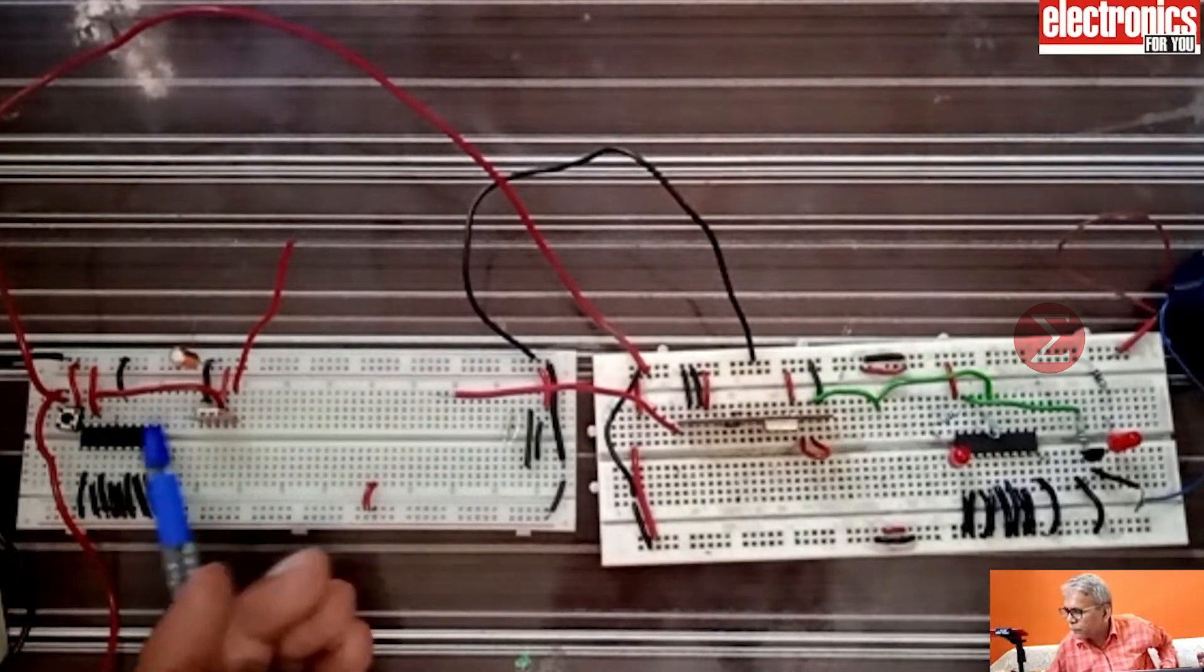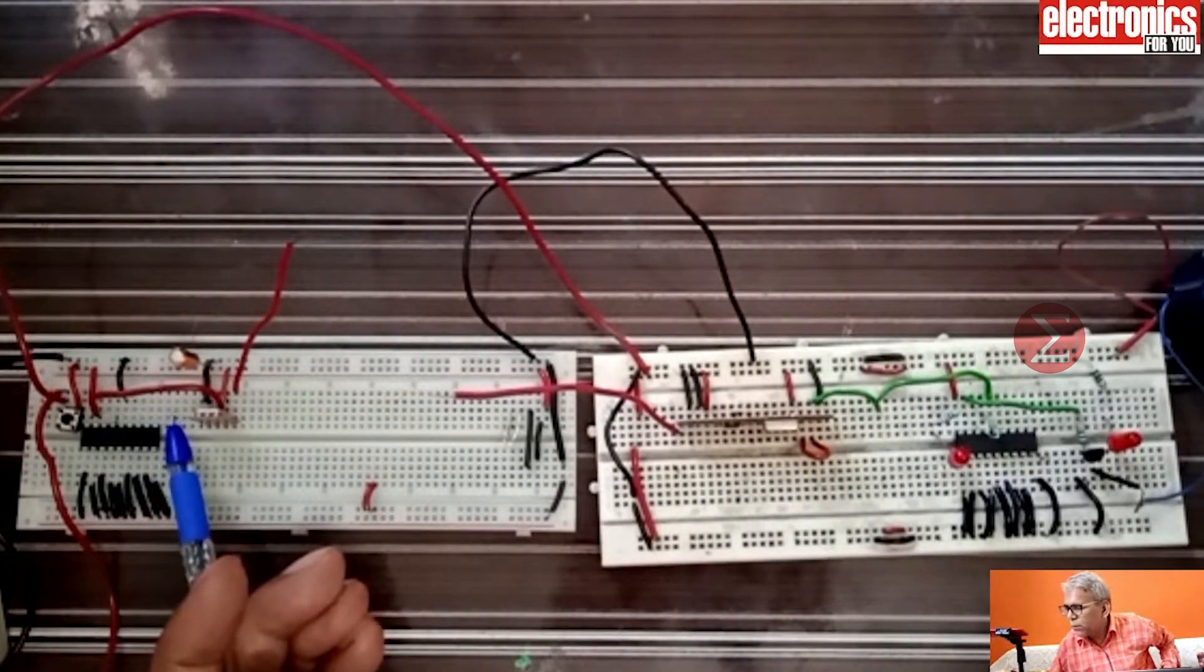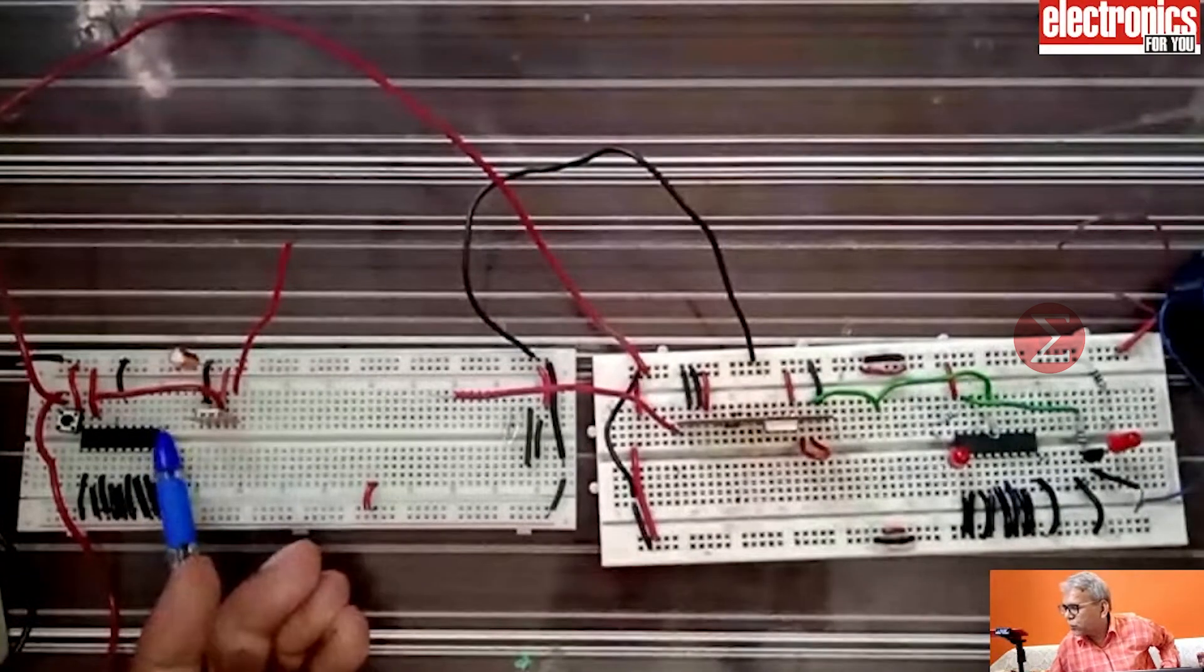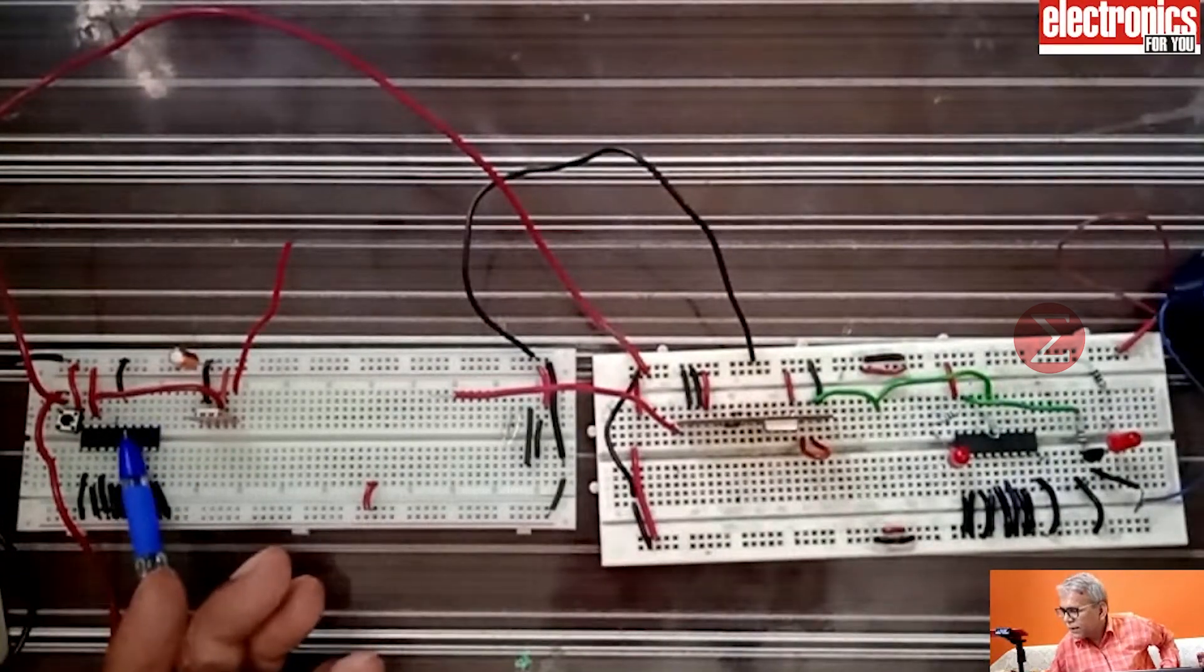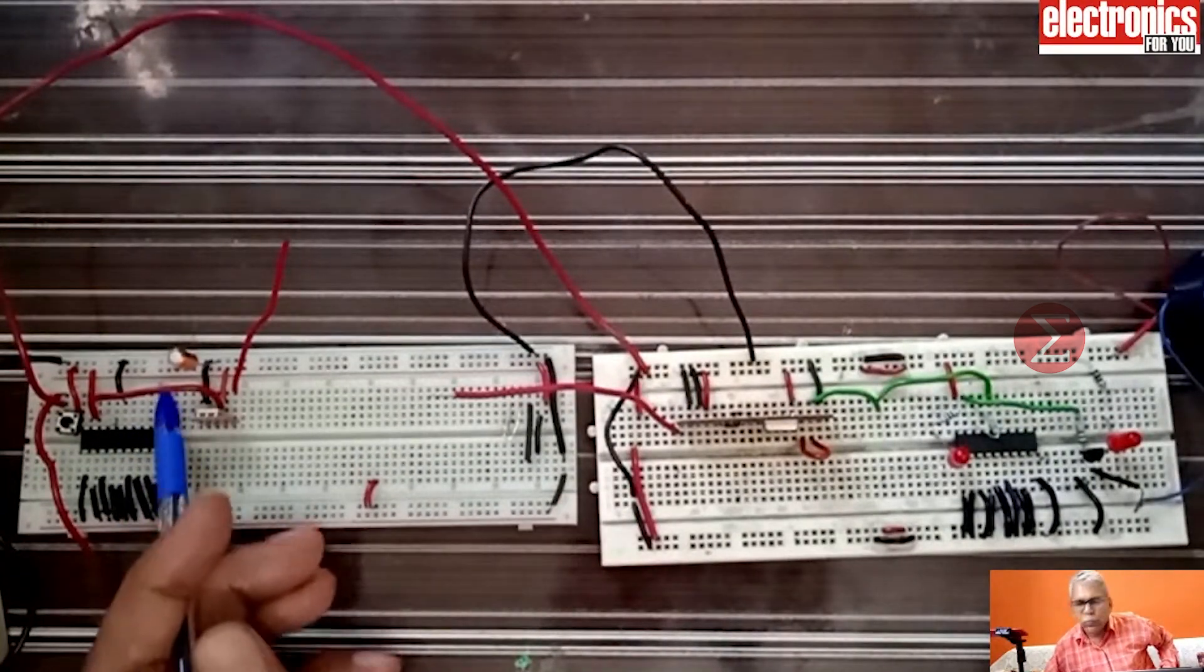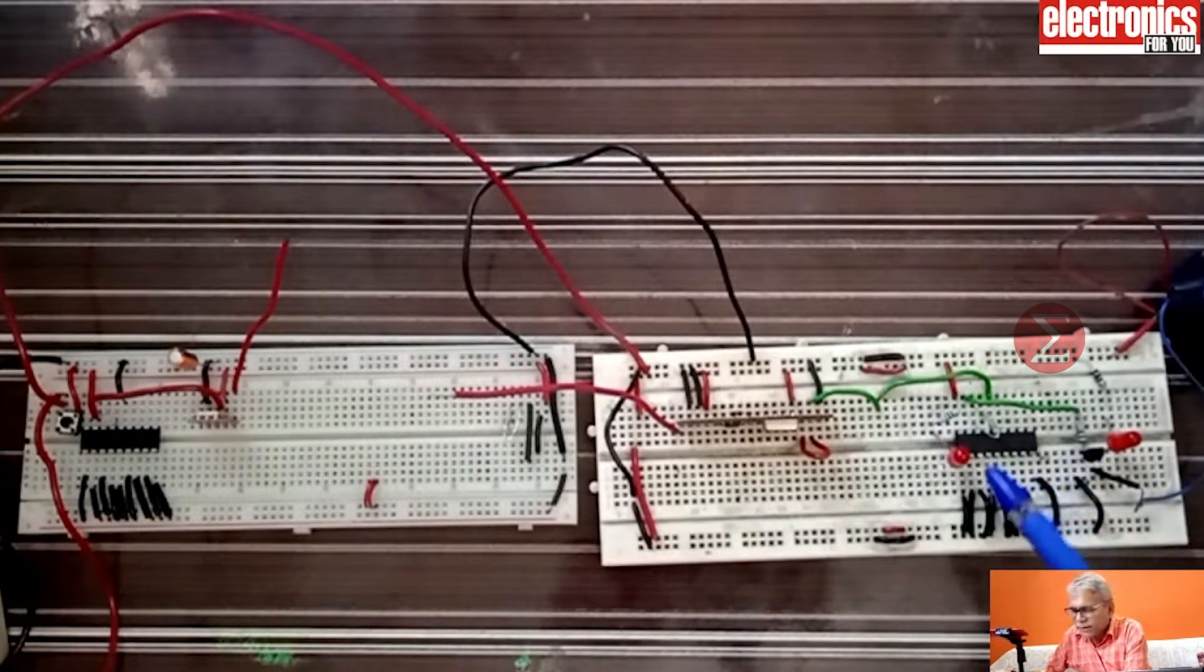You can also ring 4 different call bells wirelessly using this circuit by adding more push buttons to other pins of the encoder IC. I have not included that in this circuit, but you can create the extension of this project with less effort.